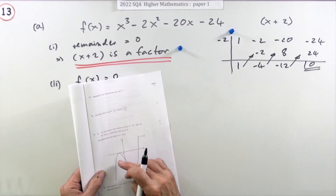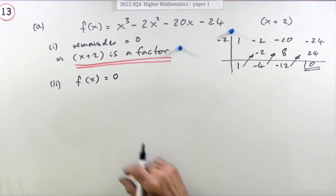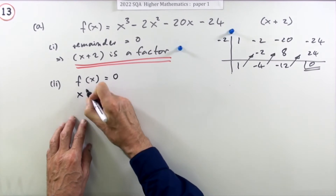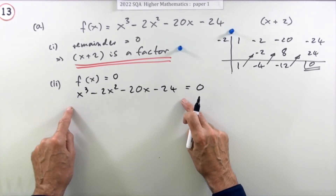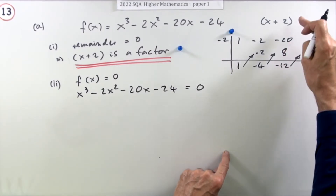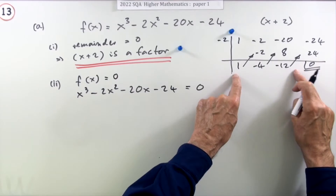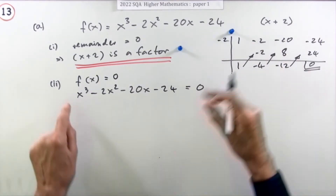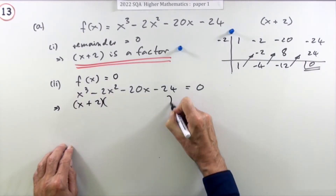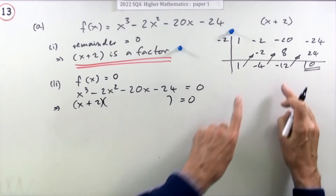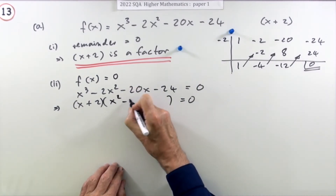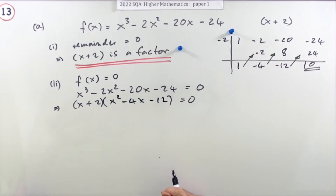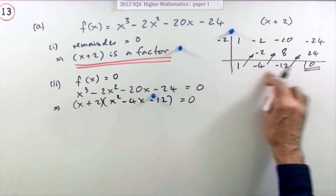For the 'hence' part, rewrite the equation: x³ − 2x² − 20x − 24 = 0. The synthetic division table tells you that dividing x plus 2 into the cubic gives a quadratic quotient. So the cubic factors as x plus 2 times a quadratic. The numbers from the table — 1, negative 4, negative 12 — are the coefficients, giving x² − 4x − 12. Extracting that quadratic from the table earns a mark.